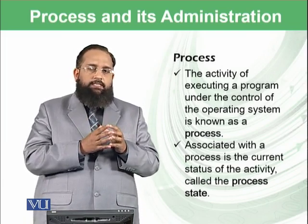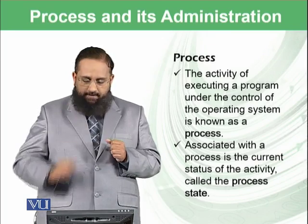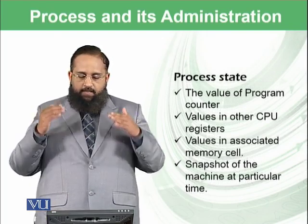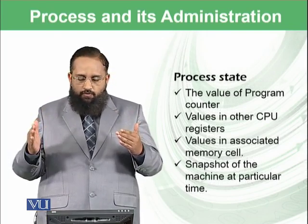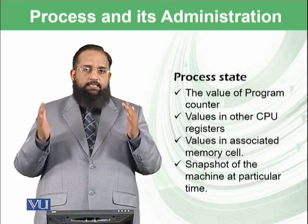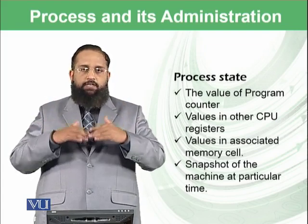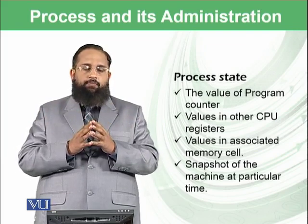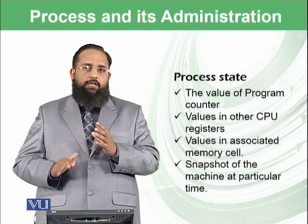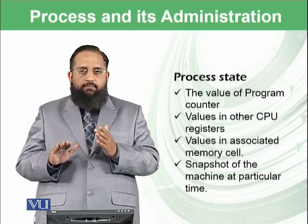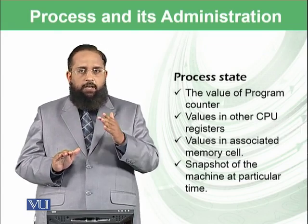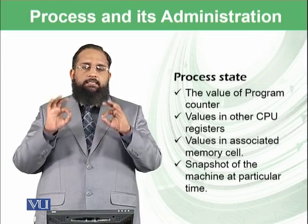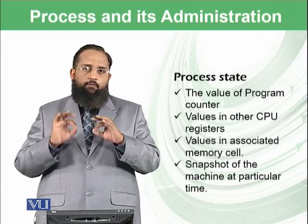All such information needs to be stored, and this is basically called the process state. In a computer system, the process state includes the value of the program counter, the values in other CPU registers, values in associated memory cells in RAM, and a snapshot of the machine at that particular time. All such information must be stored so that when switching back to this particular process, we can resume it from the same place where we left it.